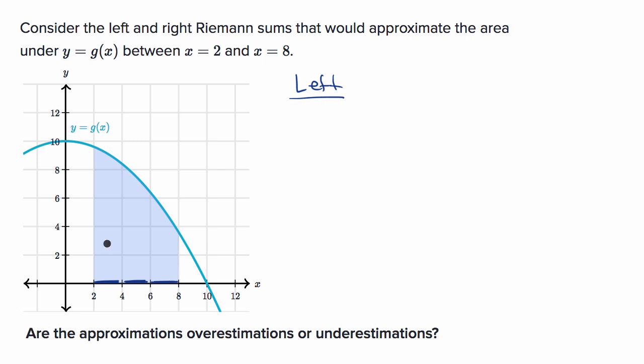If we do a left Riemann sum, you use the left side of each of these subdivisions to find the height. You evaluate the function at the left end of each subdivision for the height of our approximating rectangles. So we would use g of 2 for the first approximating rectangle, then we would use g of 4 for the next rectangle, and then use g of 6 for our third and final rectangle.